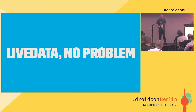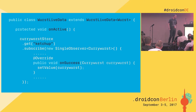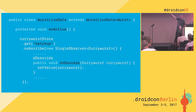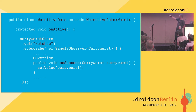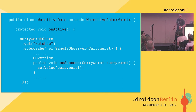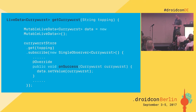With live data, that's no problem either. When extending a live data object, you override onActive() and do the same thing: currywurstStore.get(key).subscribe(), and when you get the result, you call setValue(). In the real world with RxJava, you'd hook this up to a CompositeDisposable, and on onInactive, clear the disposable.